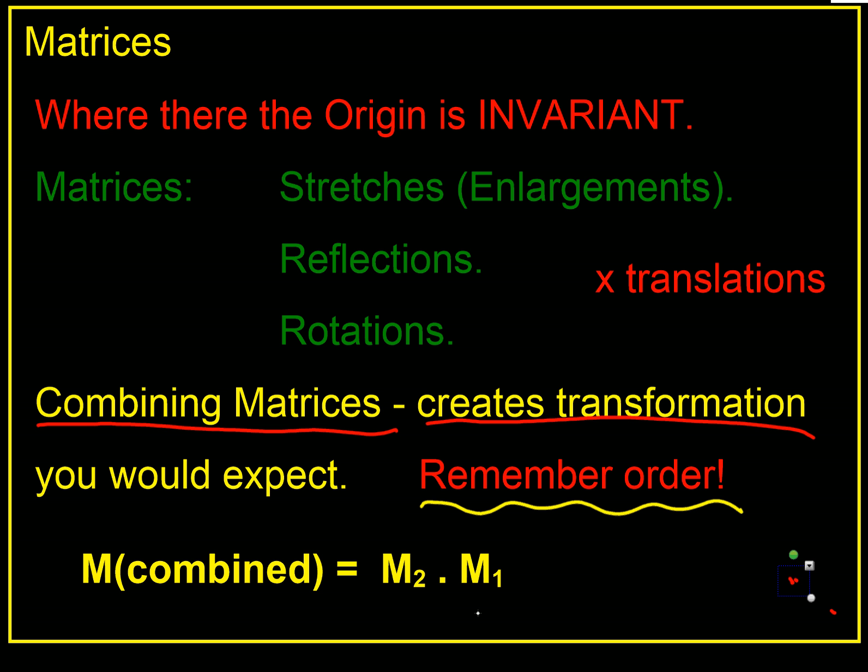So the combined matrix here, the combined matrix would be, if we're doing the M1 transformation first, then we multiply it by the M2 transformation, so they're in the opposite order to the one we might expect. So there you have it, we can combine transformation matrices and they work.